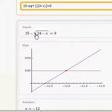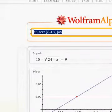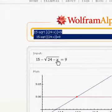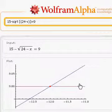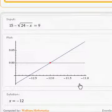There is the equation. 15 minus square root of 24 minus x equals 9. There is the plot. And the solution is x equals negative 12.